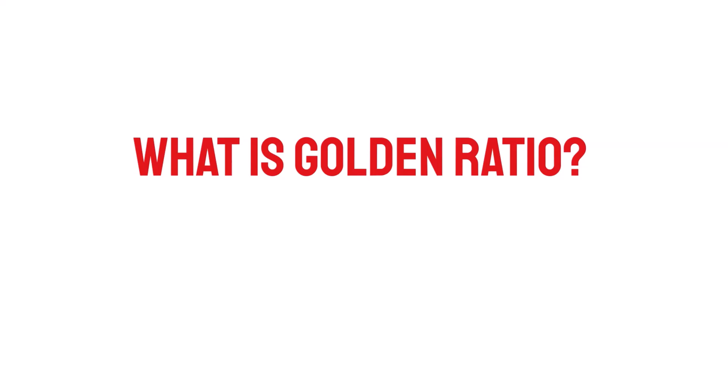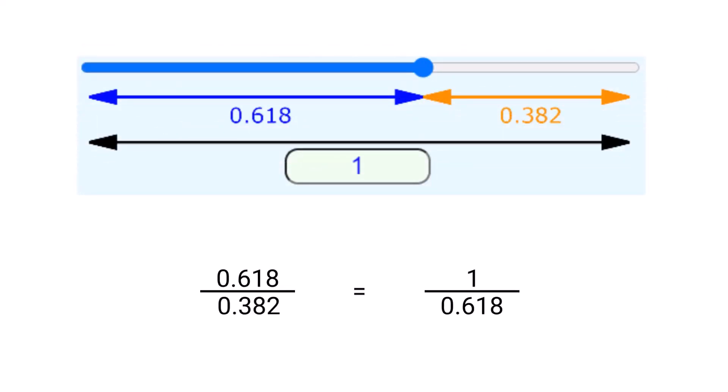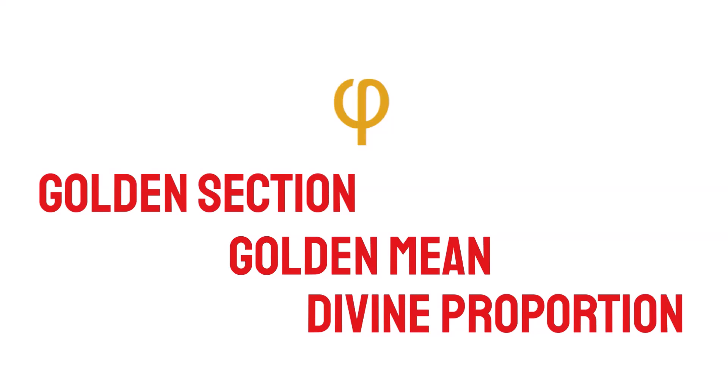There is a unique ratio that can be used to describe the proportions of everything — from nature's smallest building blocks such as atoms to the most advanced patterns in the universe like large celestial bodies. This unique ratio is called the golden ratio. We find the golden ratio when we divide a line into two parts so that the long part divided by the short part equals the whole length divided by the long part. This gives us the golden ratio: 1.618, represented by the Greek letter phi.